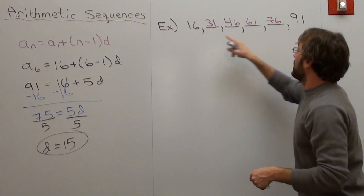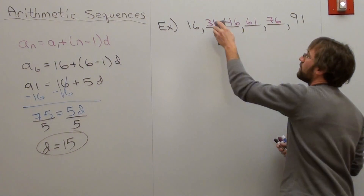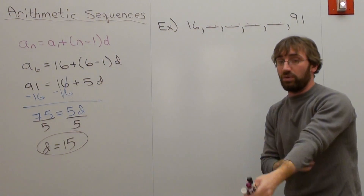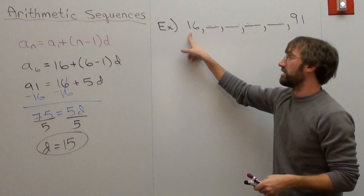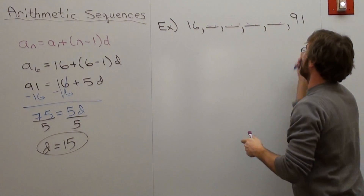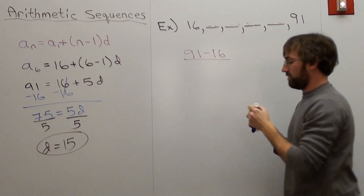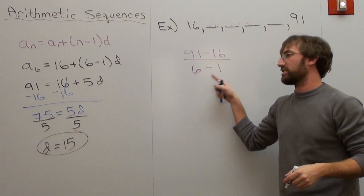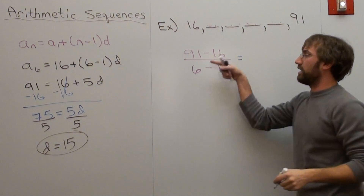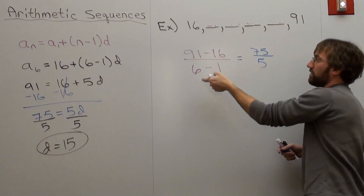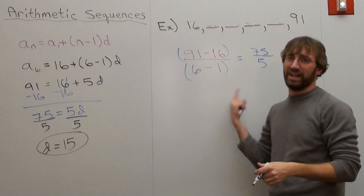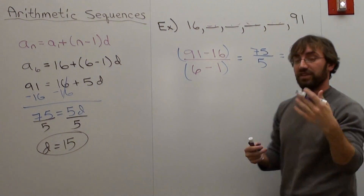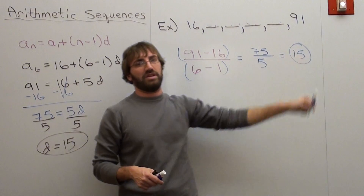So here we go. I've got 16, 31, 46, 61, 76 — I already figured out the numbers, but I'll erase them. What I do using a rate-of-change method is take the biggest number minus the smallest number surrounding the means: 91 minus 16, over 6 minus 1 — just like y sub 2 minus y sub 1 over x sub 2 minus x sub 1, finding slope. By the way, if you put this in your calculator without parentheses, you will not get the right answer. 75 over 5 is 15, so my common difference is 15. Add 15 each time and you get to 91.